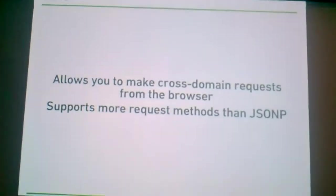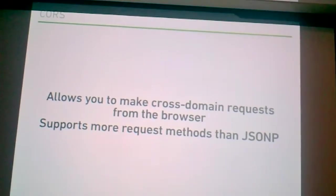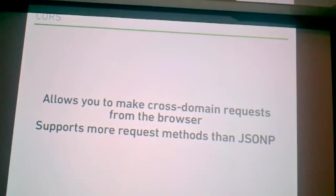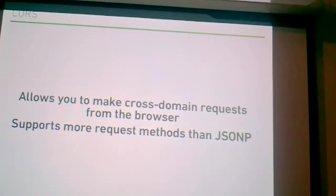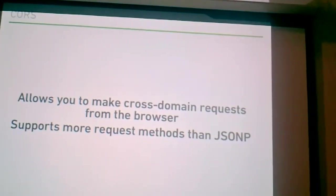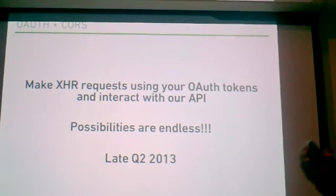CORS. As Morten also alluded to, we're going to start allowing you to make cross-domain requests from the browser. The reason why we're doing CORS is because it's more expressive than JSONP — you get more access to the request. And when you match it up, you get OAuth plus CORS and the possibilities are endless. A lot of people ask me: how can I just create a button that says 'create a ticket' on my website? Well, you can't do that now, but eventually we'll be able to get there, and that is coming late Q2 2013.